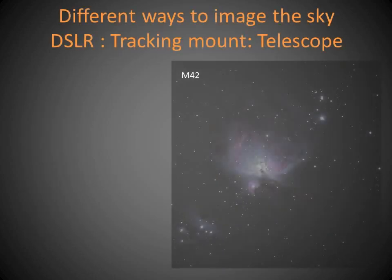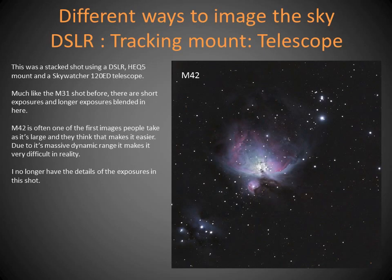Another popular target for beginners is M42. Like M31, it's popular because it's nice and big and you can see it, but as a beginner these two are probably the hardest images to capture — they're images I haven't gone back to in four years because they're very difficult. This was taken with a DSLR and tracking mount but with a Skywatcher 120ED telescope at approximately 900mm focal length, using the same technique of shorter exposures for the core and longer exposures for the outer area. So you can use a DSLR on a static tripod with a wide angle lens, on a tracking mount with a lens, or go the whole way and use a telescope.